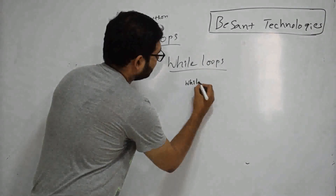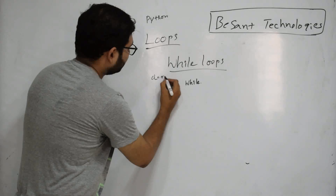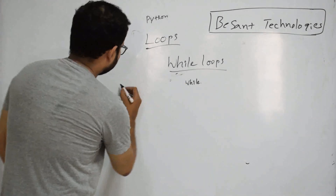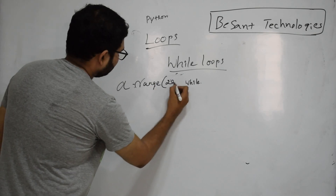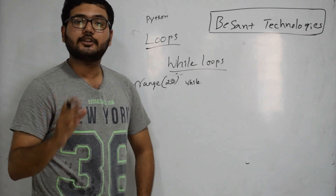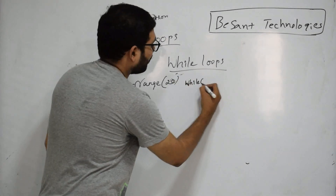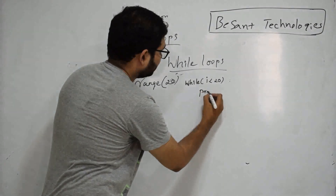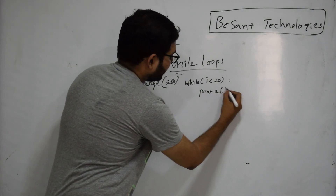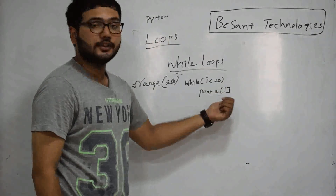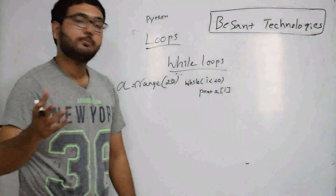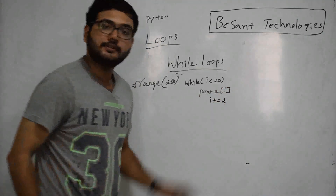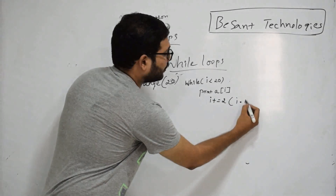So I'm creating a list ranging from 20 numbers, that is from 0 to 19. What I'm doing here is: while i less than 20, print a of i. I need even numbers, and even numbers is nothing but even index numbers. So what I can do is i plus equal to 2 — this is something similar to i equal to i plus 2.